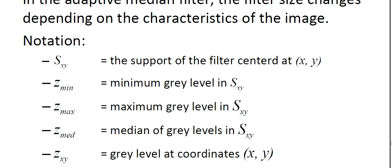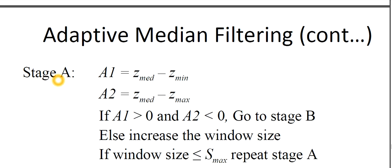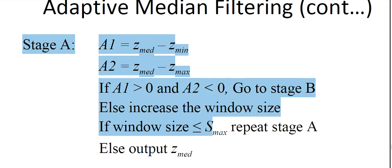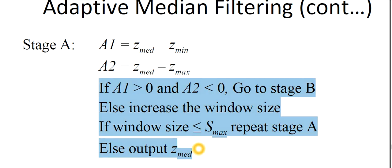S_xy means the support of the filter centered at (x, y). Z_min is the minimum gray level in S_xy. Z_max is the maximum gray level in S_xy. Z_med is the median gray level in S_xy. Z_xy is the gray level at coordinates (x, y). S_max is the maximum allowed size of S_xy. A1 is defined as Z_med minus Z_min, and A2 is defined as Z_med minus Z_max.